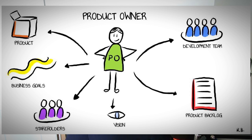One of the most important roles in Agile is the product owner role. And in a lot of organizations, the product owner is put in a very important position, but is not given the right type of support. Product owners need three things: they need autonomy, authority, and availability.